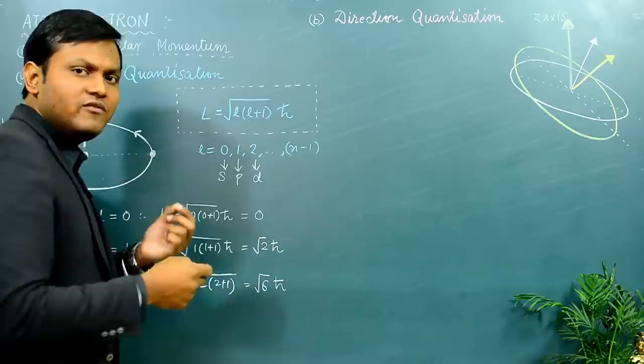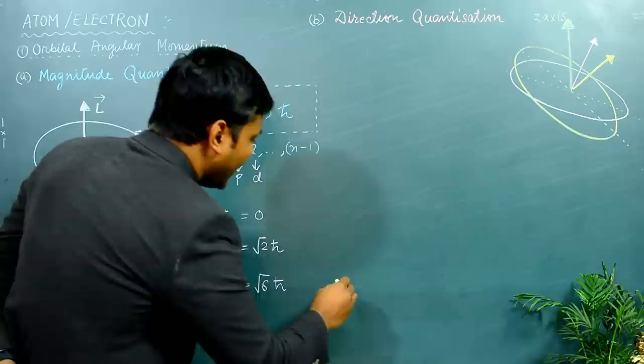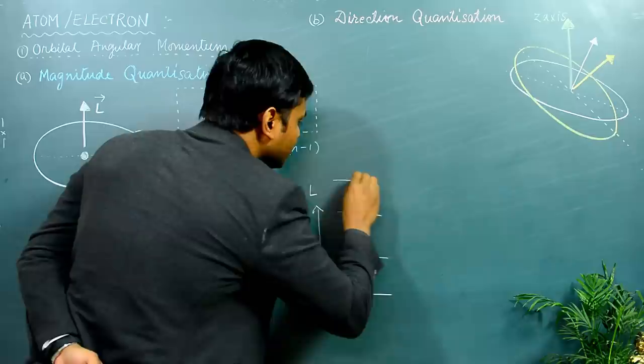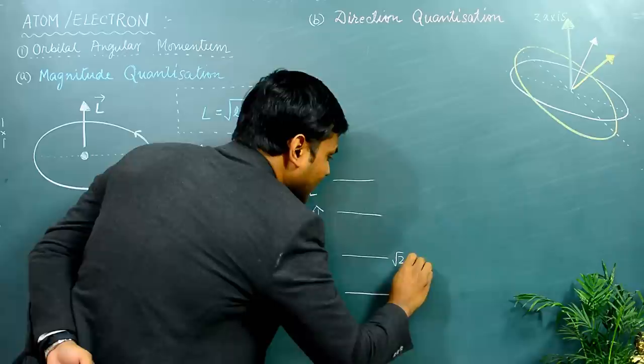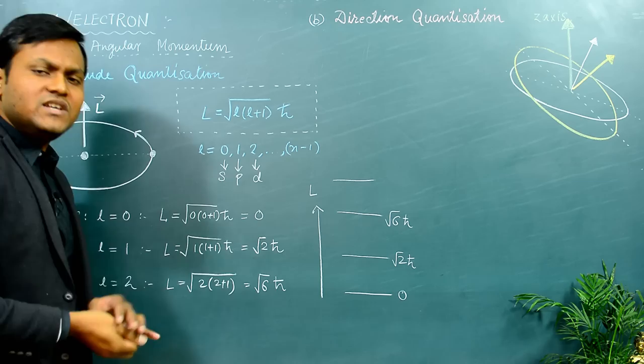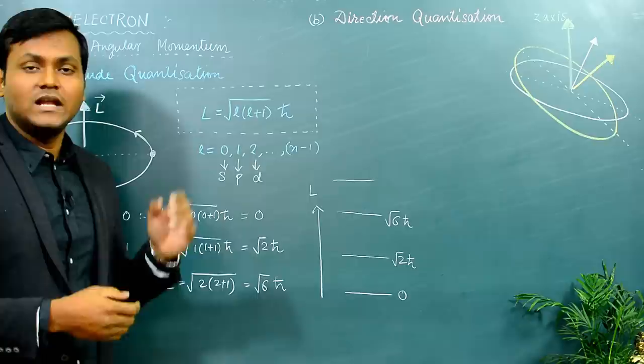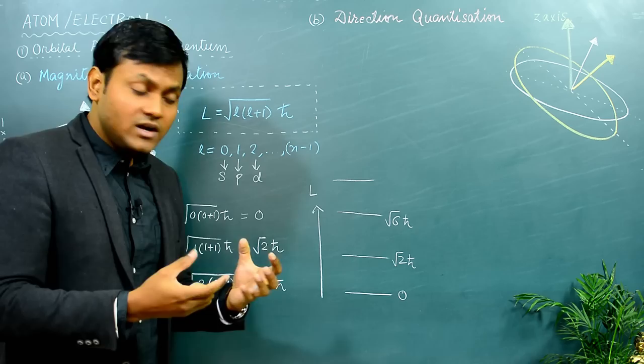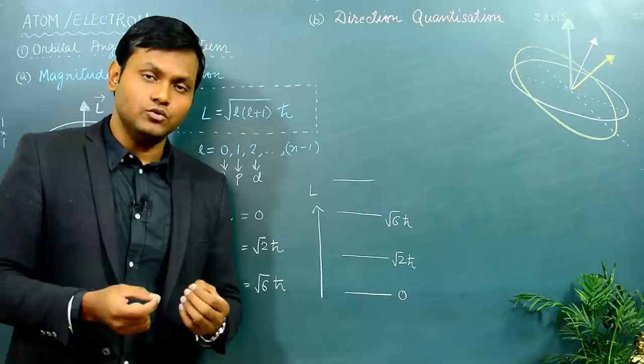So the angular momentum of an electron revolving around the nucleus is restricted to certain particular values: 0, root 2 ℏ, root 6 ℏ, and so on. The electron can only possess these certain discrete values — this is known as quantization of the magnitude of orbital angular momentum. The orbital angular momentum can only have values allowed by this equation; it cannot have a continuous range of values.